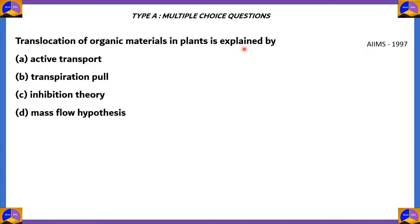Translocation of organic materials in plants is explained by: A, active transport; B, transpirational pull; C, inhibition theory; D, mass flow hypothesis.